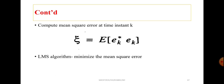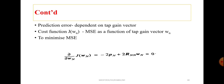The mean square error is calculated by taking the expectation of e_k squared. The prediction error depends on the tap gain vector. We define the cost function j(w_n) as the mean square error, expressed as a function of the tap gain vector w_n.